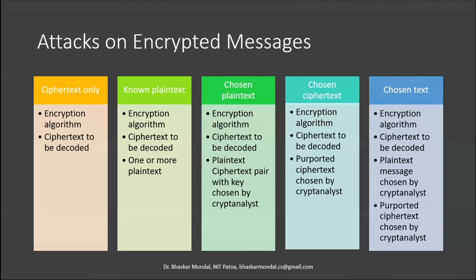Attacks on encrypted messages can be classified into several basic types. The first is ciphertext-only attacks, where the attacker has collected many ciphertexts and tries to figure out what key was used or how the key was generated and what the plaintext was. The attacker has the encryption algorithm — since we assume the algorithm is known to all — and the ciphertext to decode.